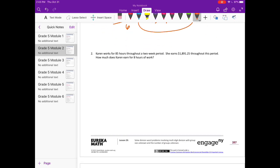Number two, Karen works for 85 hours throughout a two-week period. She earns $1,891.25 throughout this period. How much does Karen earn for eight hours of work? So 85 hours gets her $1,891.25. So let's figure out how much one hour, how much she would make in one hour by dividing.